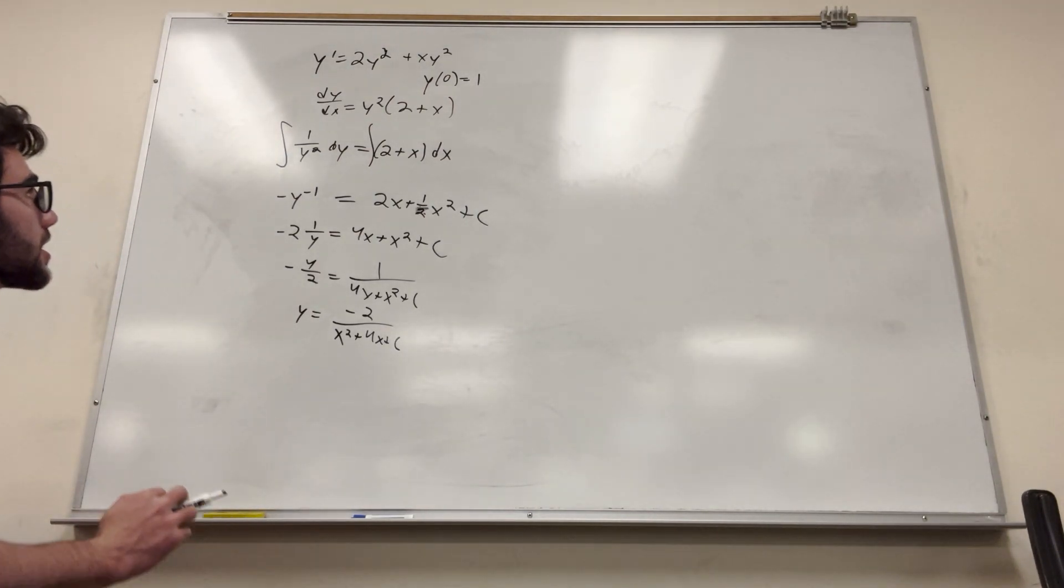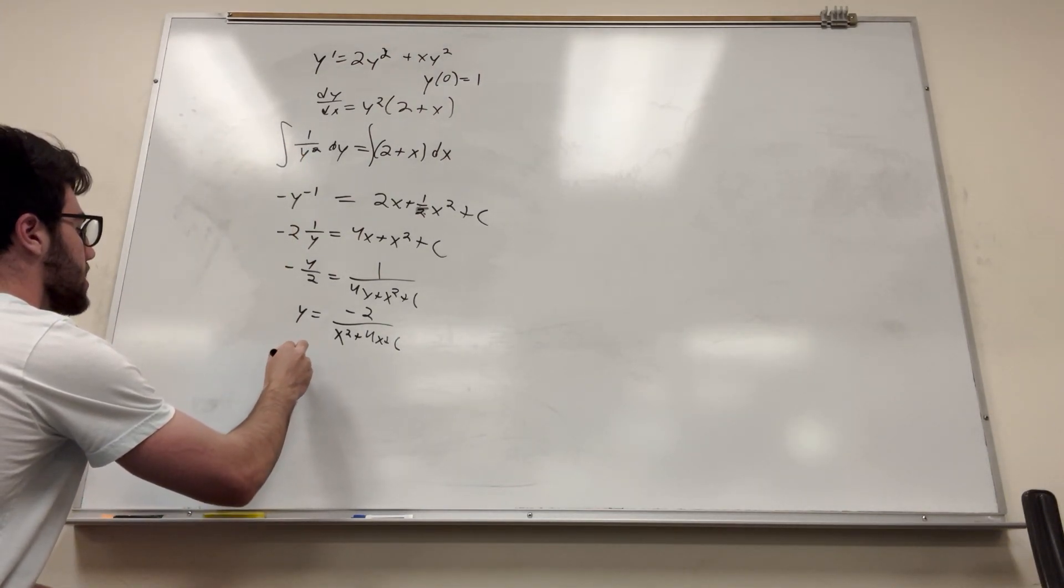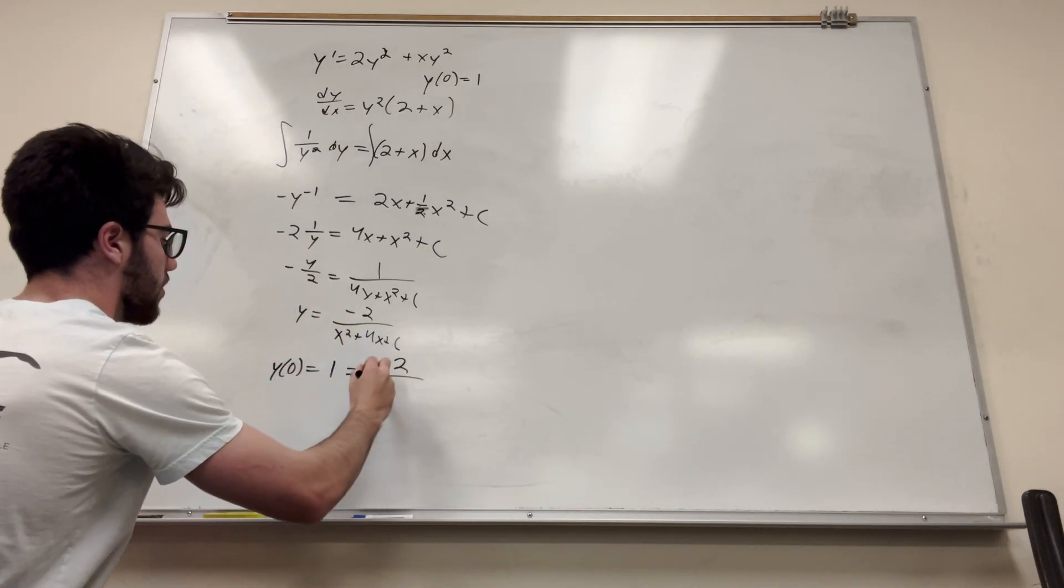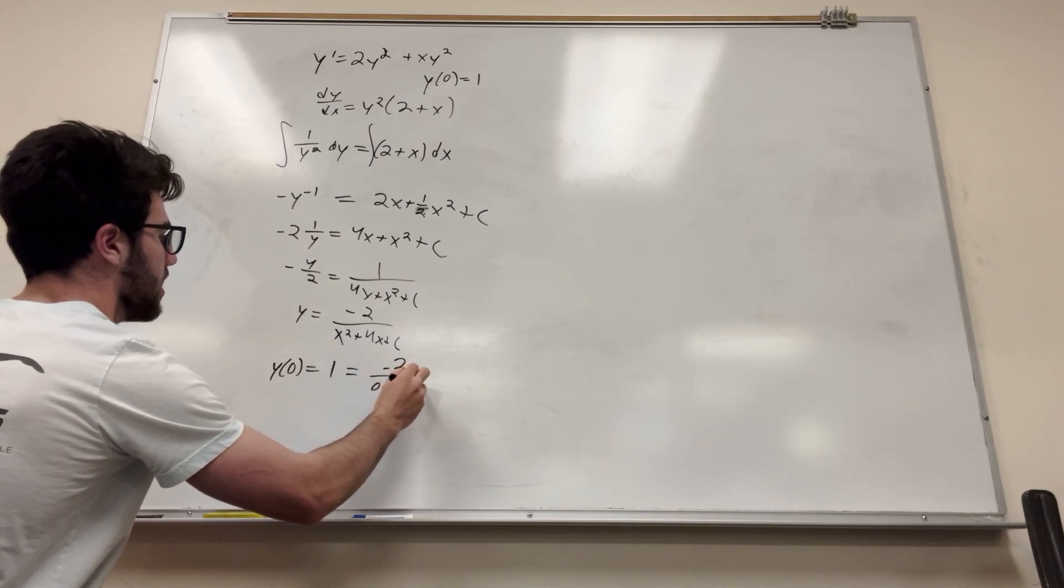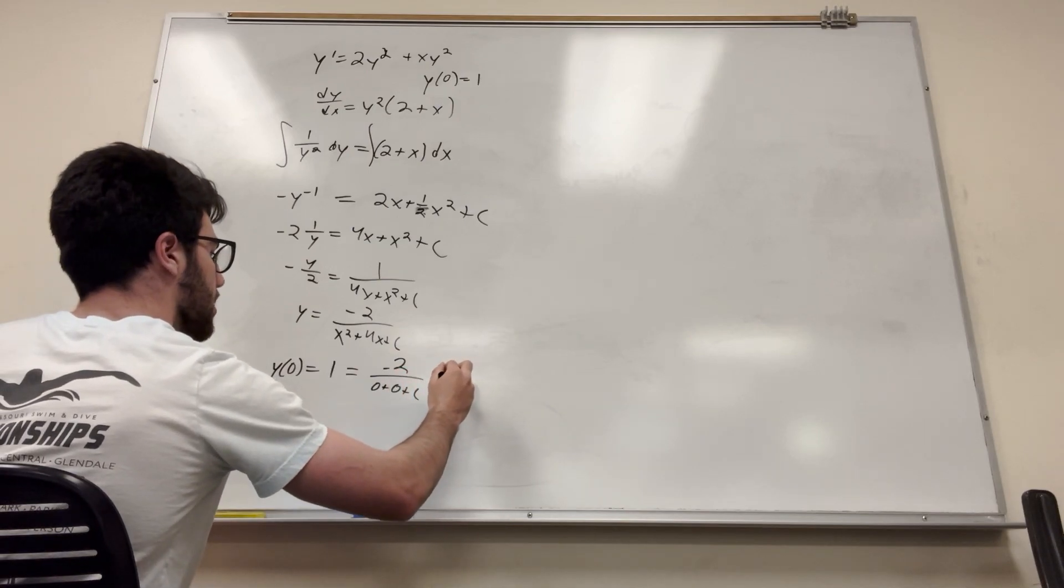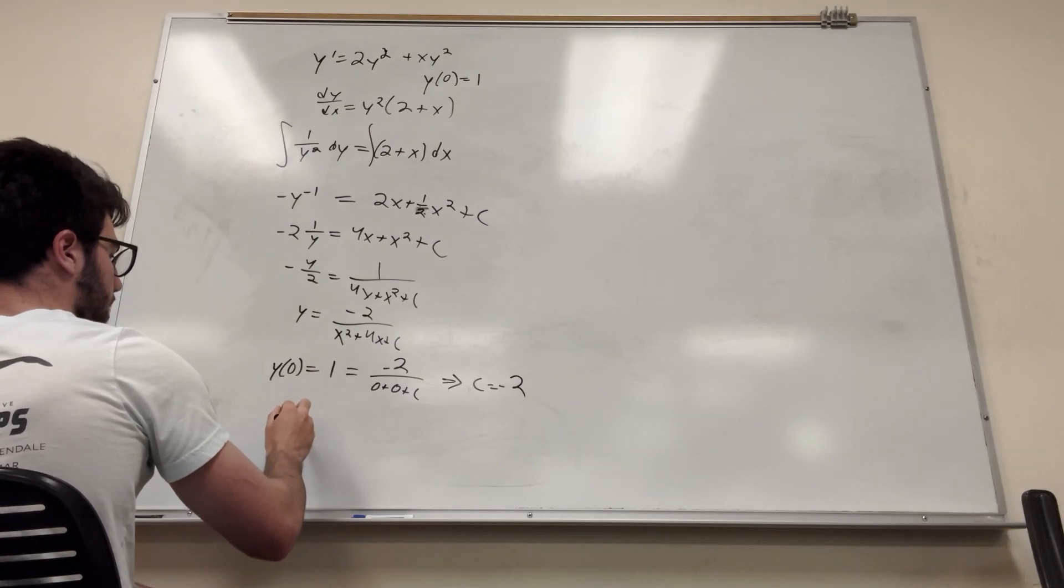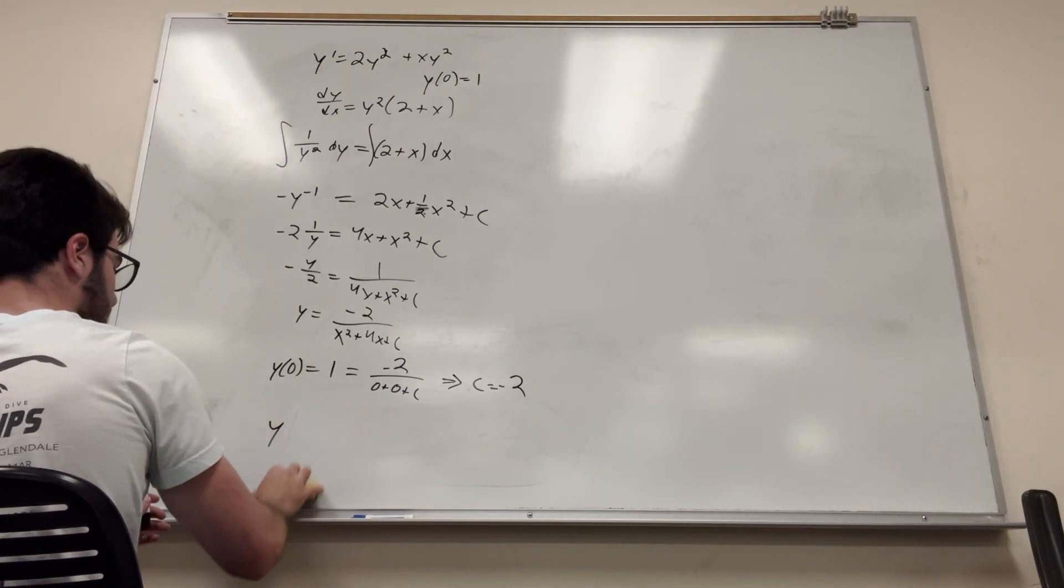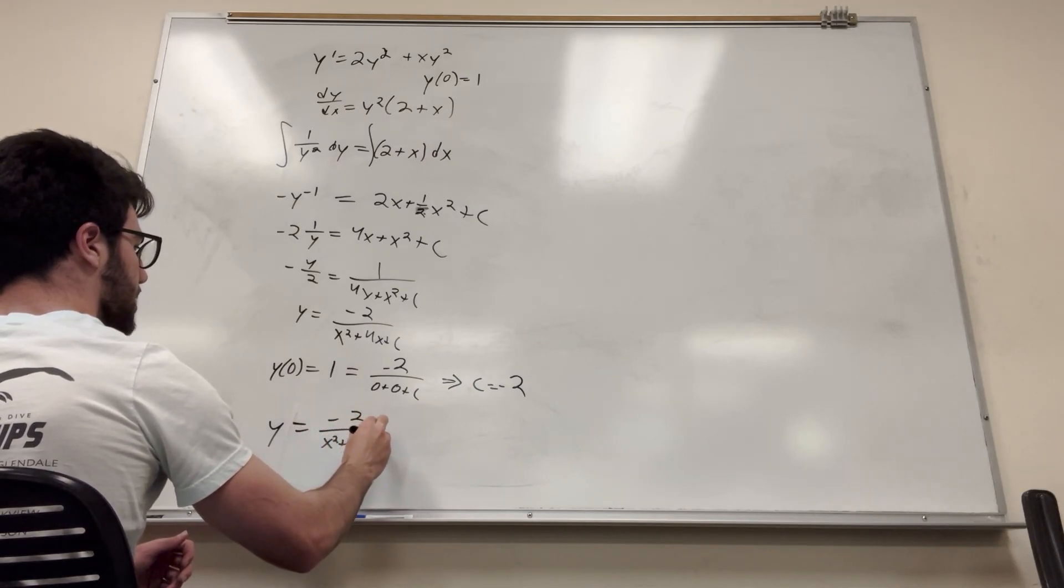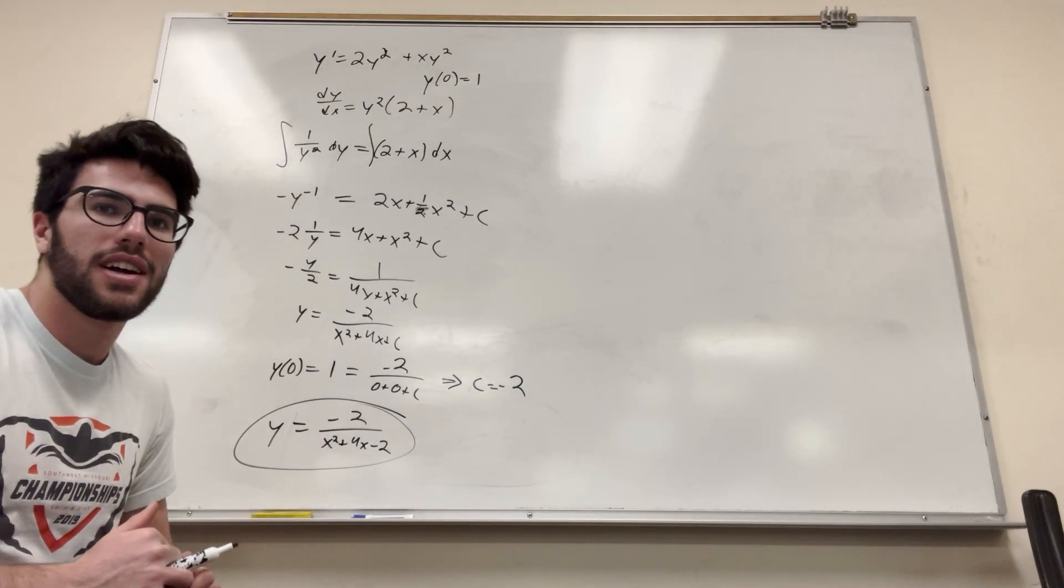Now let's go ahead and find our specific solution. What we do is we plug in y of 0 equal to 1. So y of 0 is equal to 1. What would this be equal to if it's 0? So it's going to be negative 2 over 0 plus 0 plus c. To figure that out, obviously c is just going to be equal to negative 2. So our equation is going to be y is equal to negative 2 over x squared plus 4x minus 2. That's our equation. Nice job, we did it.